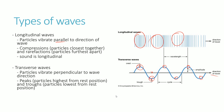The amplitude is the maximum distance from the baseline or rest position to the highest point — or the lowest point — of the wave. In other words, the distance between the rest position and the crest, or the rest position and a trough, is the amplitude. These distances are always the same. One cycle is where the wave goes up, down, passes the trough, and returns to the rest position.